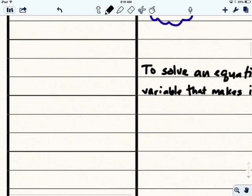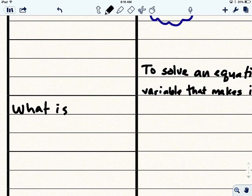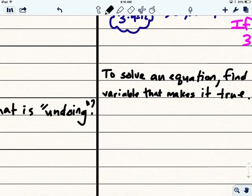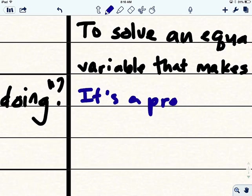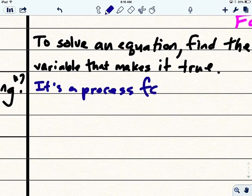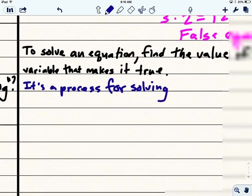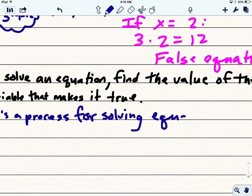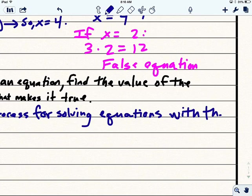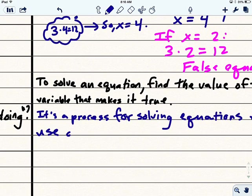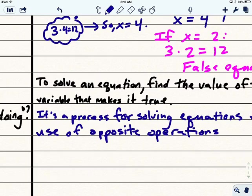So then our second big question is, what is undoing? It's a process for solving equations with the use of opposite operations.